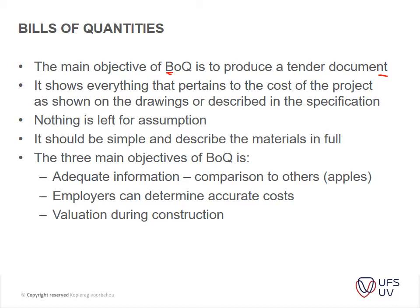It usually starts with your preliminaries and general, then earthworks, then concrete, masonry, waterproofing, roof coverings, structural steel, carpentry and joinery, etc. So it basically divides your project into different trades to assist in the procurement process. It tries to follow the logical flow of the project and the different contractors that you need to actually produce the construction project.